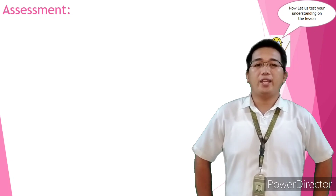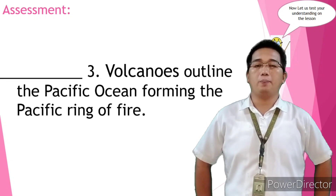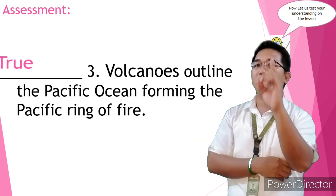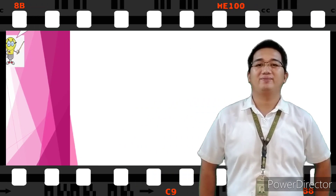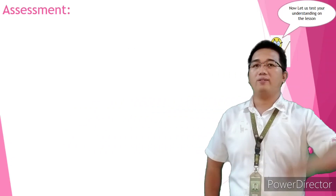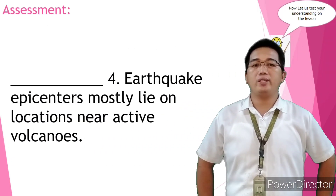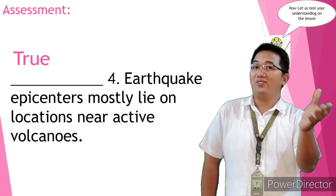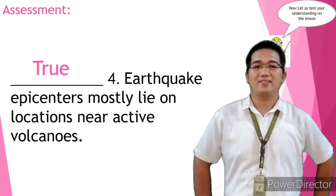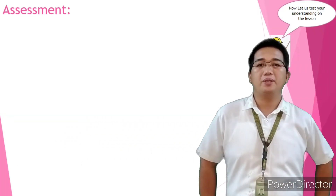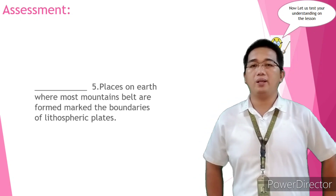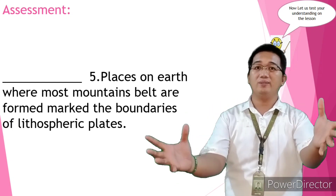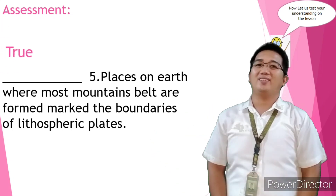Question number three: volcanoes outline the Pacific Ocean forming the Pacific Ring of Fire. The answer is true! Question number four: earthquake epicenters mostly lie on locations near active volcanoes. The answer is true! Question number five: places on Earth where most mountain belts are formed mark the boundaries of the lithospheric plates. The answer is true!